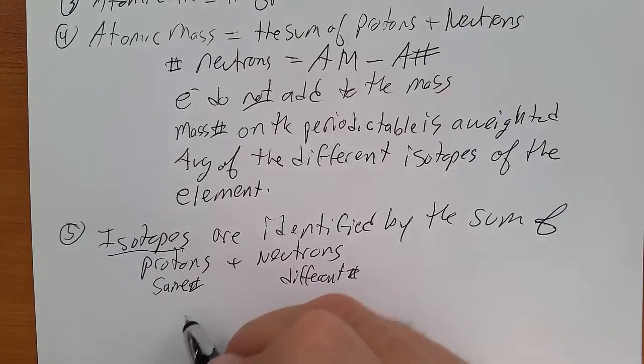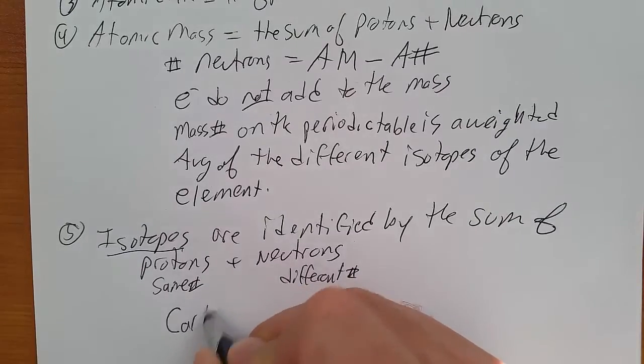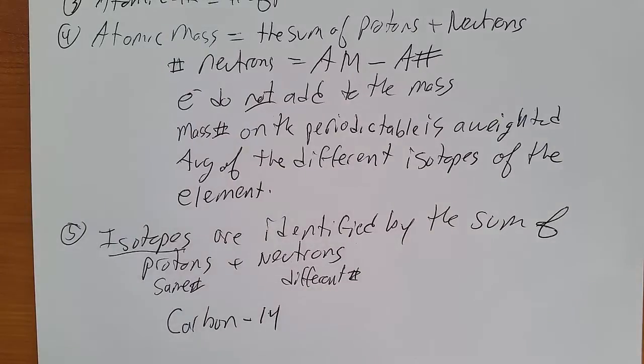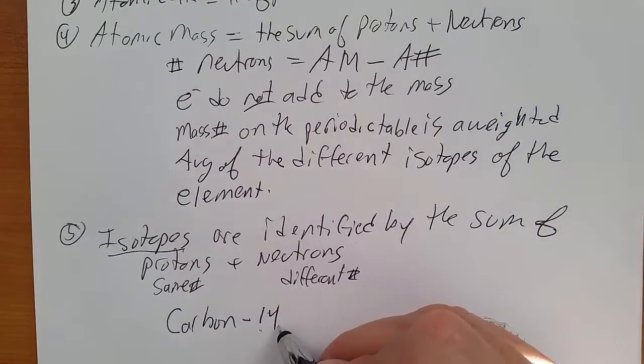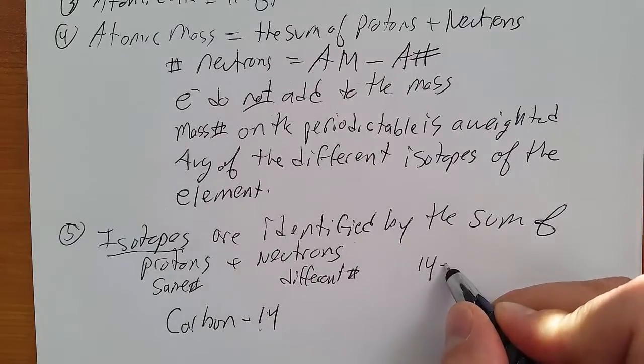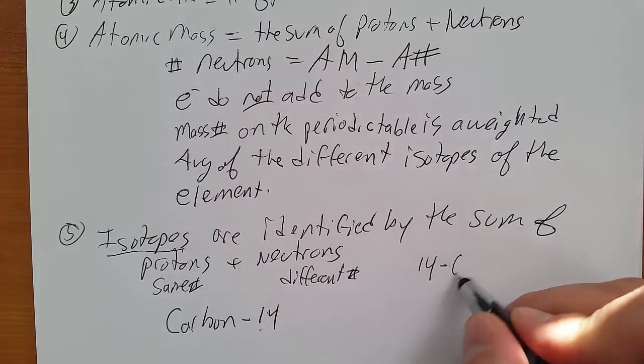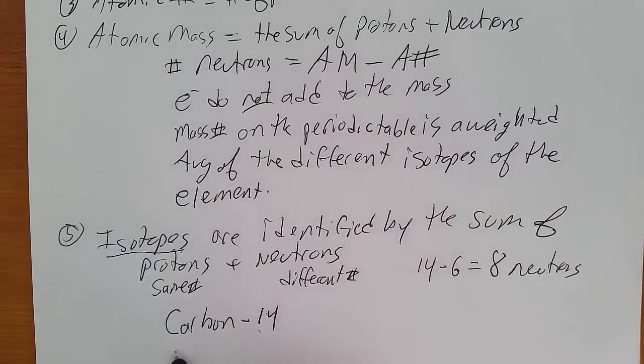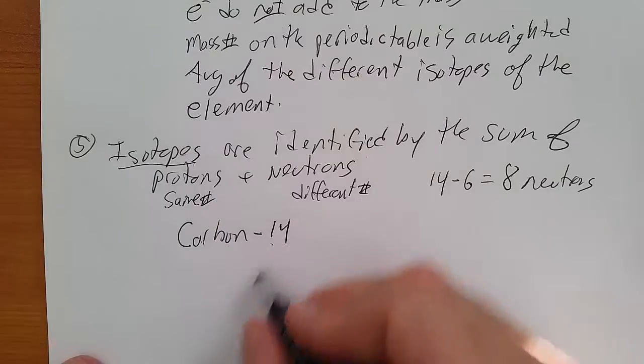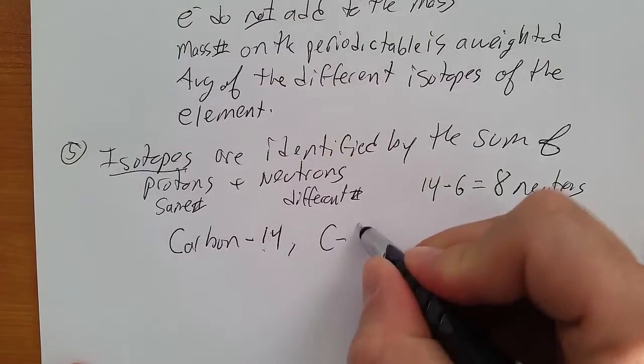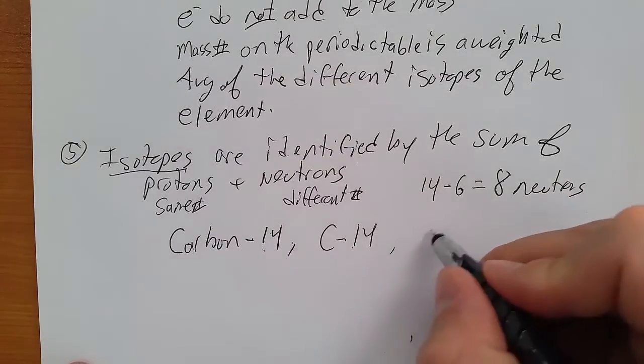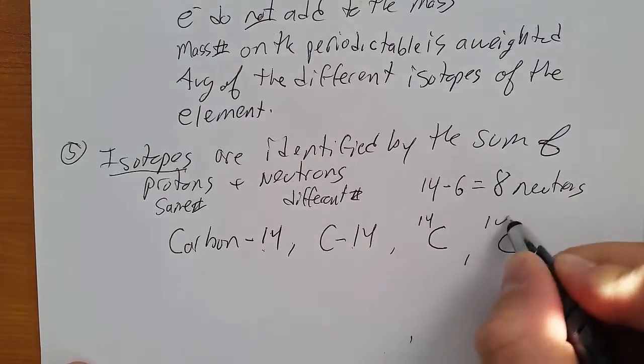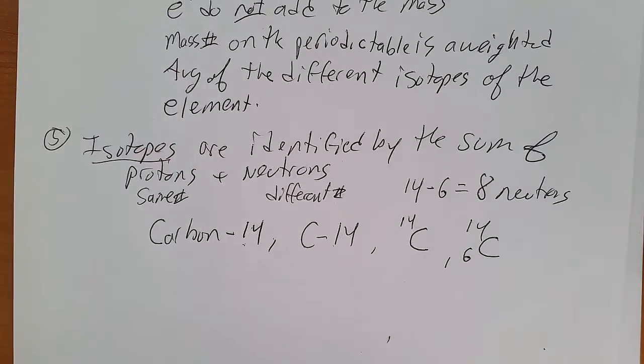So some examples of an isotope, right? If we talk about carbon-14, right, we take 14, which is the mass of carbon-14, minus the atomic number for carbon, which is 6, which is 6, is 8 neutrons. And carbon-14 can be written like this. Can be written out carbon-14. Can be written as C-14 for carbon-14. Can also be written carbon-14 or carbon-14 with the atomic number there like so.